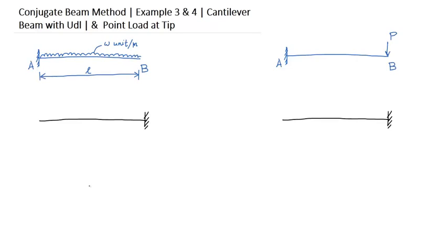So just draw the M by EI diagram for this beam. It will be parabolic in shape, negative value.